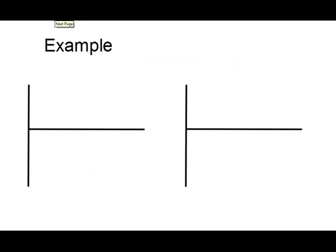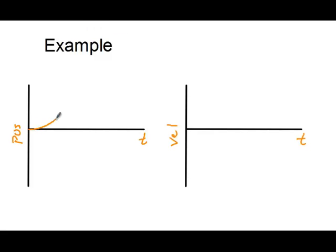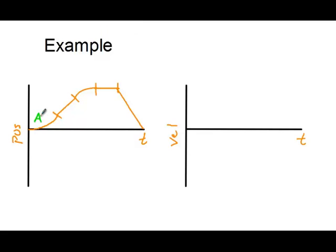Now let's take an example and make a corresponding velocity versus time graph for our position versus time graph. I'll label my axes: position and time on one graph, velocity and time on the other. I'm going to draw a general shaped line and see if we can make the corresponding velocity graph. It starts with a little curved section, then a straight section, a little curved at the top, goes straight across, then straight again. I'm going to label these sections: A, B, C, D, and E — you can tell when the shape changes.